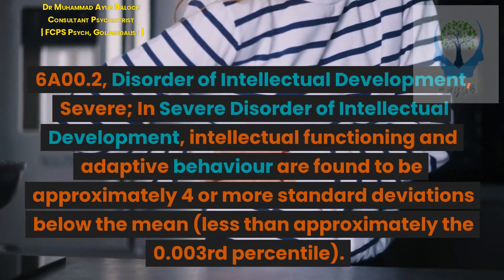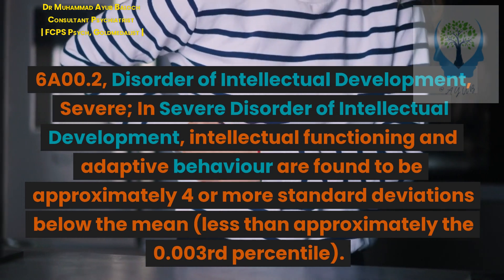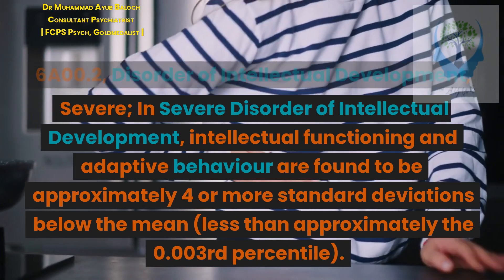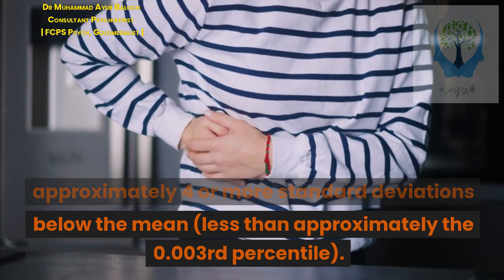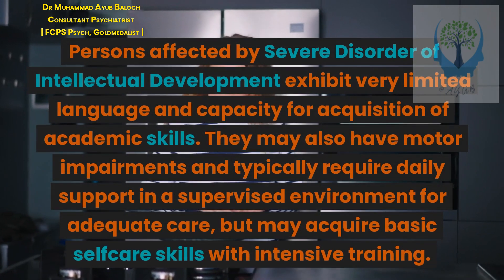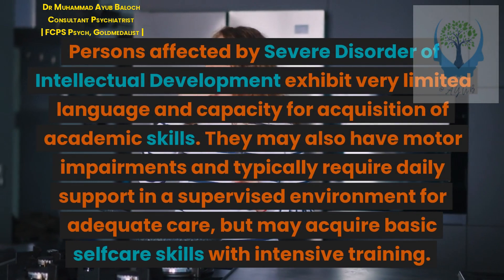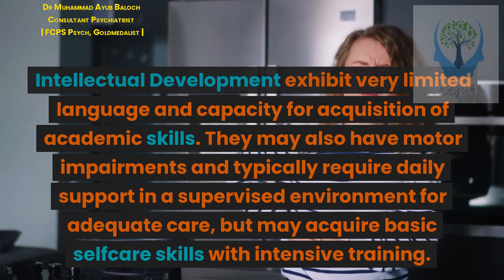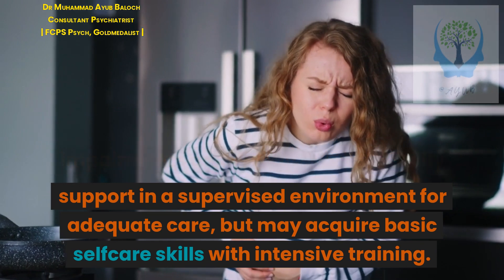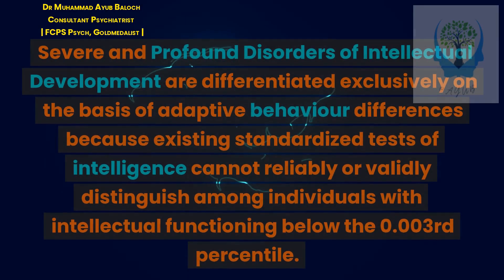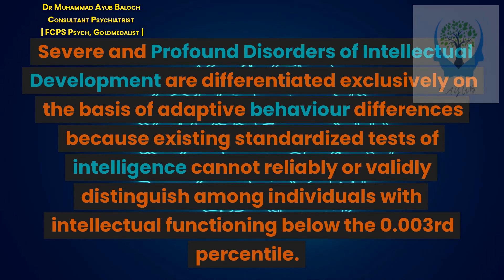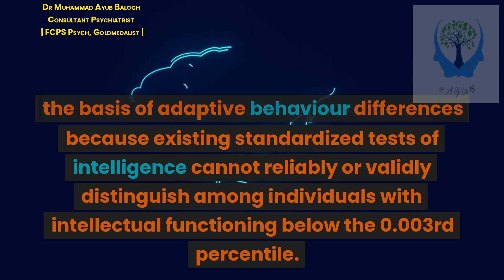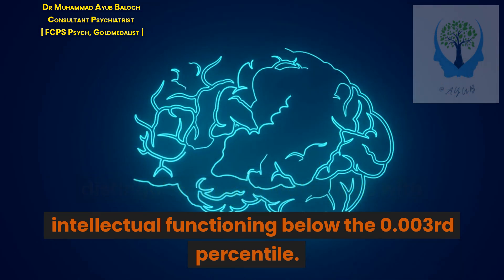6.00.2 Disorder of Intellectual Development, Severe. In Severe Disorder of Intellectual Development, intellectual functioning and adaptive behavior are found to be approximately 4 or more standard deviations below the mean, less than approximately the 0.003rd percentile. Persons affected exhibit very limited language and capacity for acquisition of academic skills. They may also have motor impairments and typically require daily support in a supervised environment, but may acquire basic self-care skills with intensive training. Severe and profound disorders are differentiated exclusively on the basis of adaptive behavior differences because existing standardized tests of intelligence cannot reliably or validly distinguish among individuals with intellectual functioning below the 0.003rd percentile.